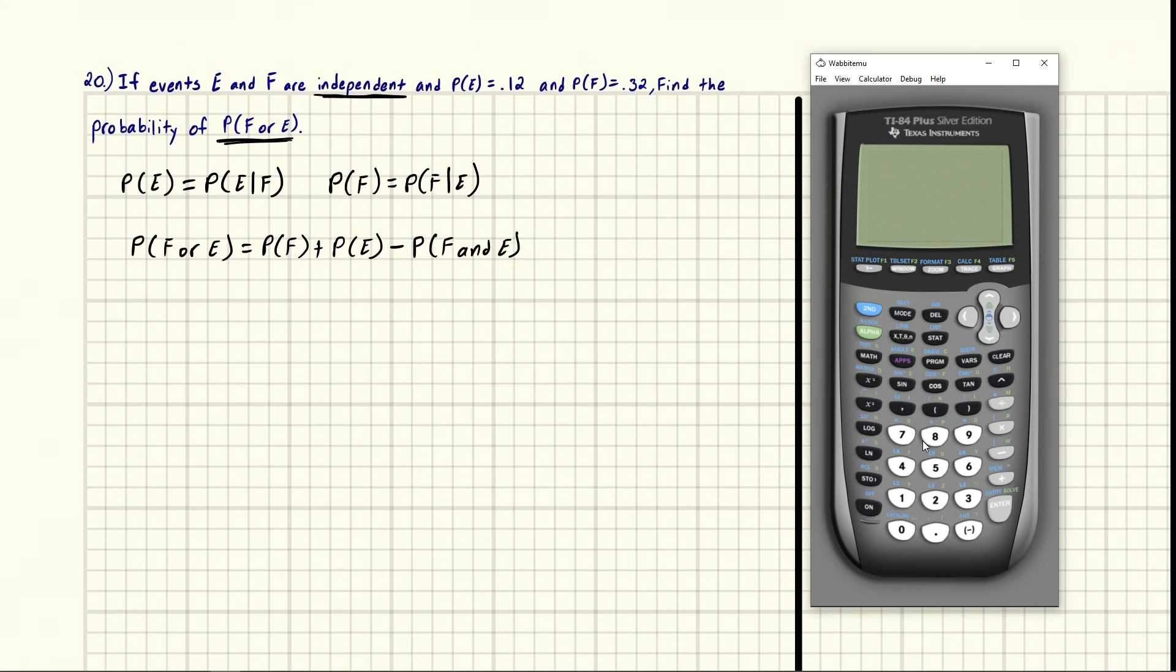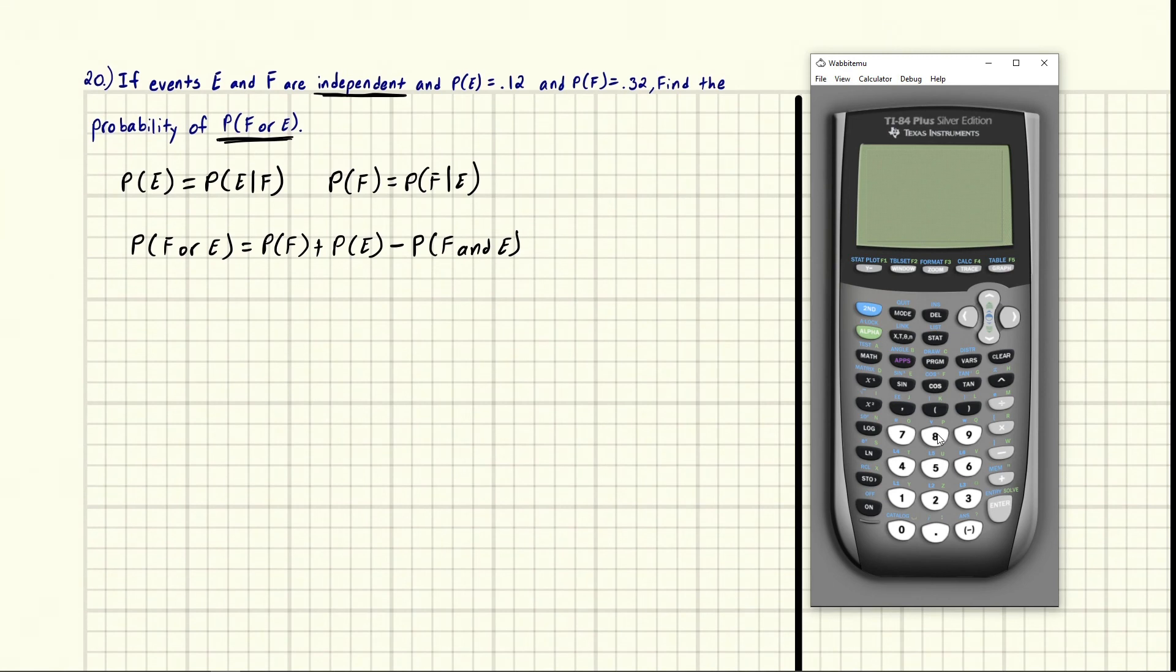These two pieces of information are everything we need. First off, we need to figure out how to get rid of this, because we have the probability of F and we have the probability of E, but this probability of F and E is going to throw us off. So we need the formula for this.